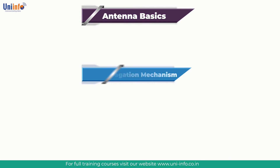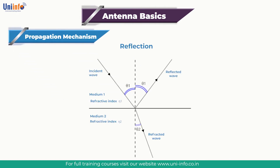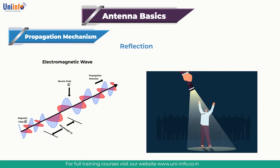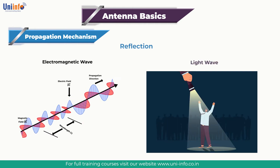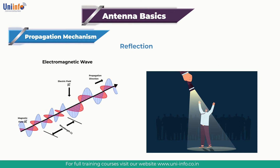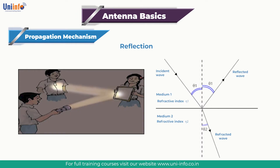Our next topic is propagation mechanisms. It includes, first, reflection. It is possible for radio waves to be reflected in the same way as light waves. As both light and radio waves are forms of electromagnetic waves, they are both subject to the same basic laws and principles. Visual examples of light reflections are everywhere, from specific mirrors to flat reflective surfaces like glass and polished metals.